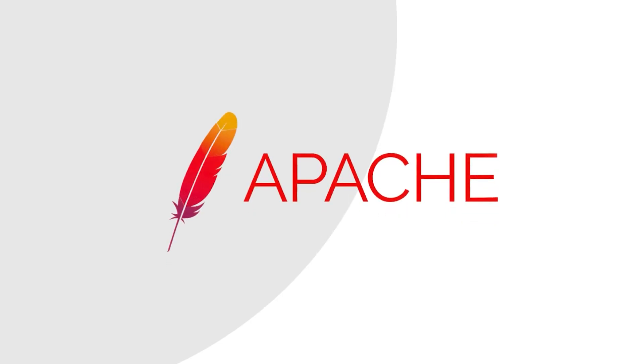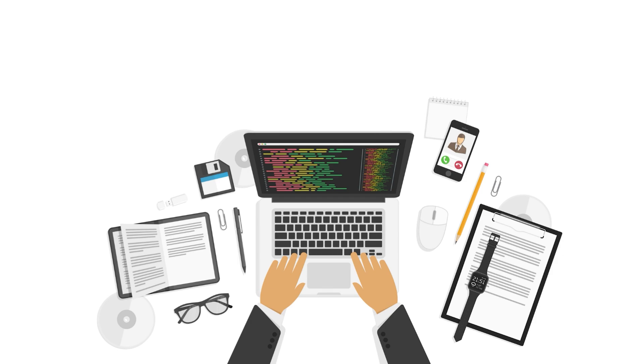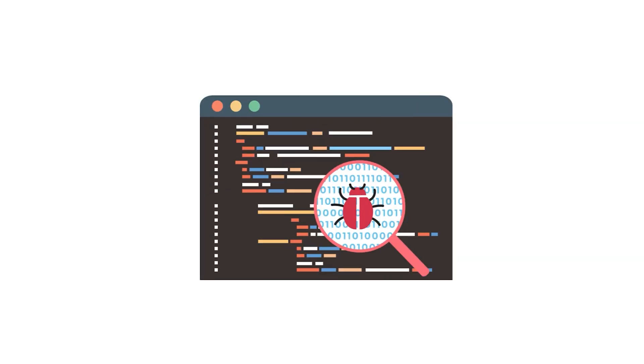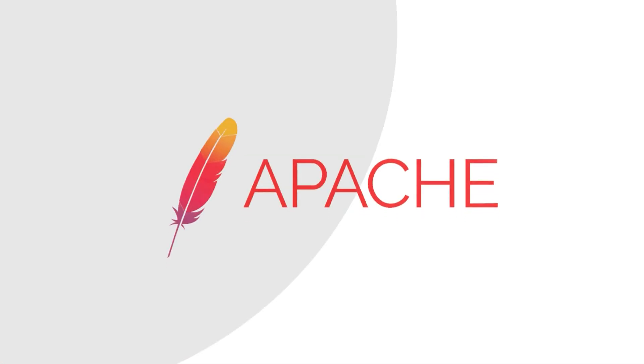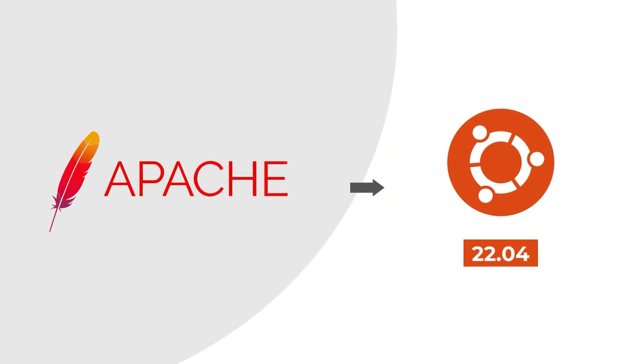Apache is an open source web server widely used by programmers and web developers for code testing. It is responsible for accepting HTTPS requests from the user and providing the required services in the form of web pages or files. If you're a software tester, you're on the right track to set up your server on Ubuntu system. In this video, I will show you how to install Apache web server on Ubuntu version 22.04. Let us begin.